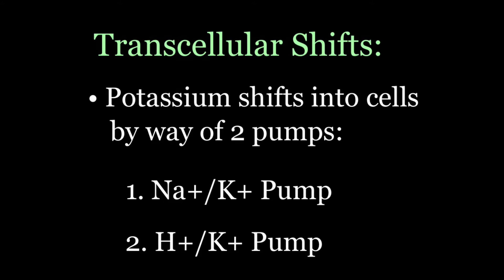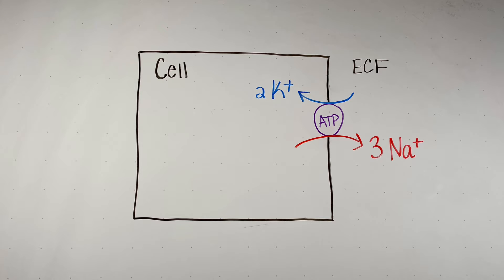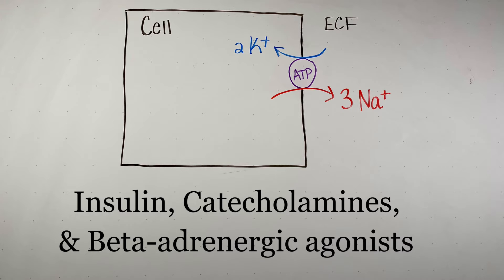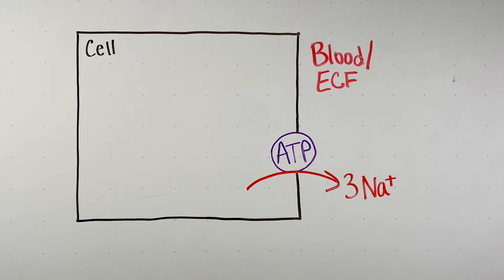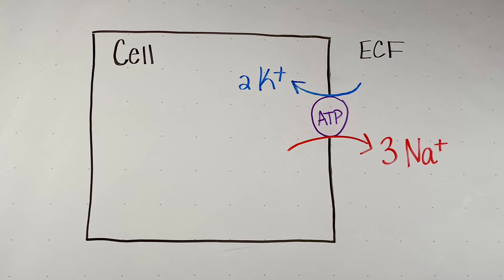The last cause to discuss is the factors that cause potassium to shift from the extracellular fluid to the intracellular fluid. Potassium can shift into cells via two pumps: the sodium-potassium pump and the hydrogen-potassium pump. Certain medications increase the activity of the sodium-potassium pump, including insulin, catecholamines, and beta-adrenergic agonists like albuterol. If we increase the activity of this pump, it transfers two potassium ions into the cell for every three sodium ions it takes out, but now at an accelerated rate, which decreases our blood potassium levels.